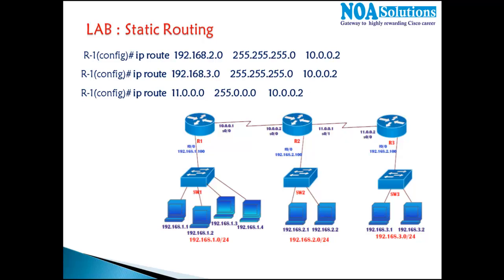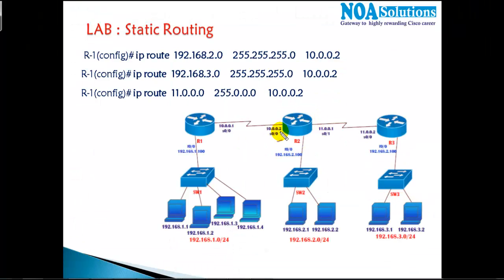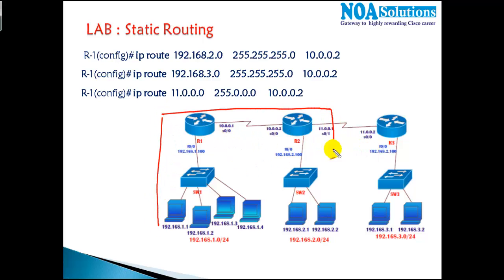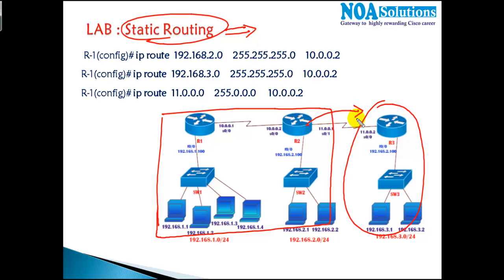In this video we'll continue with static routing from the previous concept. The only difference is we'll add one more router. In the previous example we saw how to do static routing with two routers, but what if there's one more branch office? In static routing, the bigger the network, the more lines you need to configure — that's one of the major drawbacks.